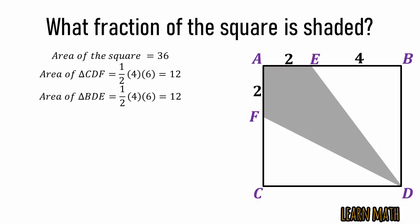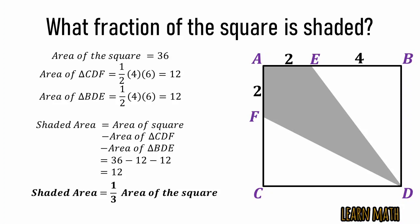Now the shaded area is equal to area of the square minus area of the triangle CDF minus area of the triangle BDE, so 36 minus 12 minus 12, that is equal to 12. So shaded area is equal to 1 by 3 area of the square, which is the required answer.